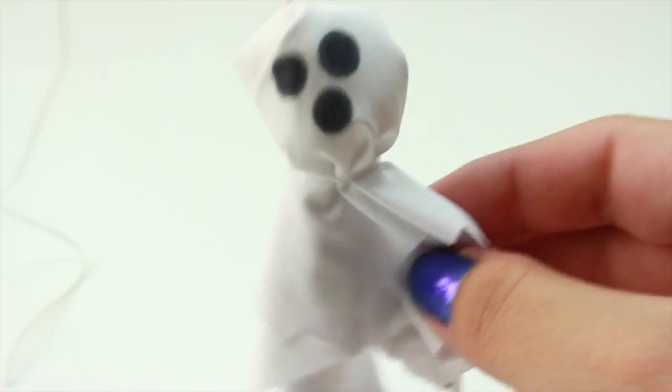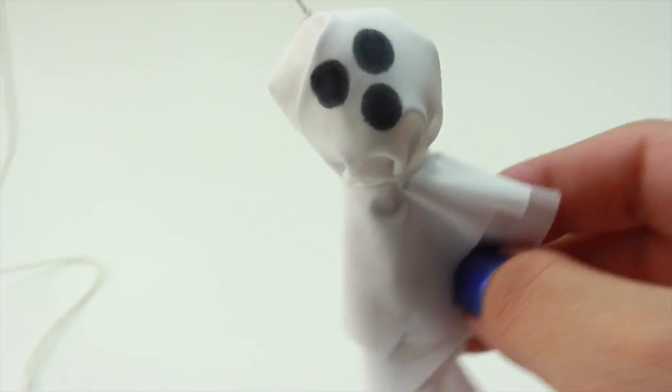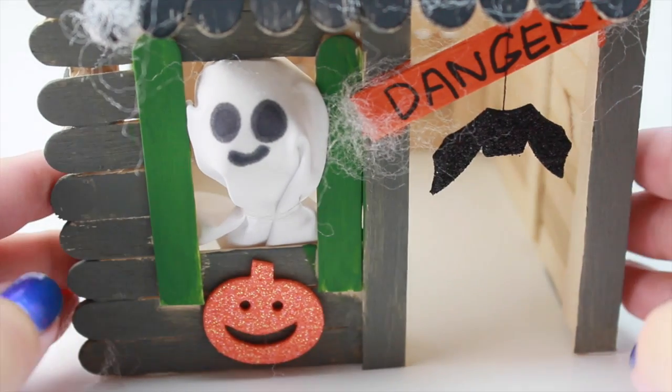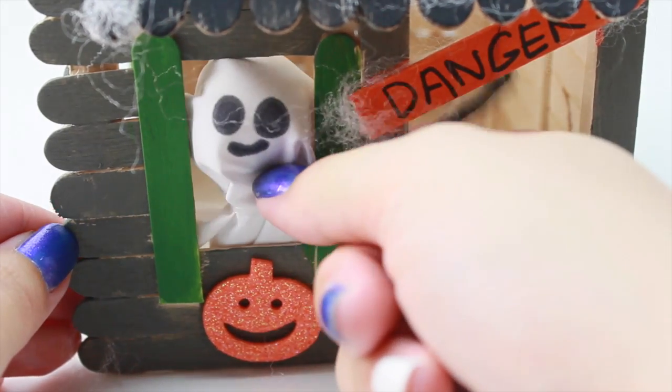This is how the ghost looks like and it can dangle by the string. When you have a haunted house or something you want to hang it on, go ahead and hang it on there. Here is one that I made for my haunted house. Actually this one does not have a string, I just kind of popped it on here because it fits in the window and it stays.